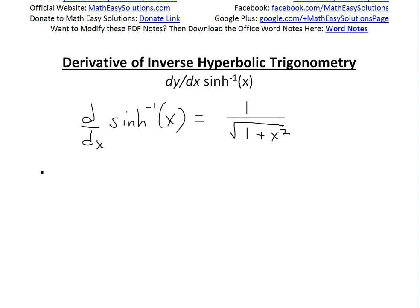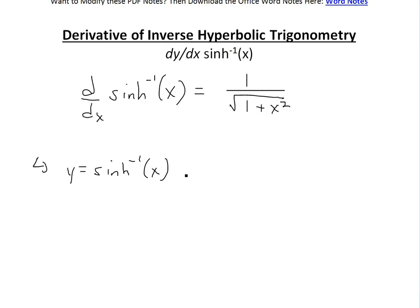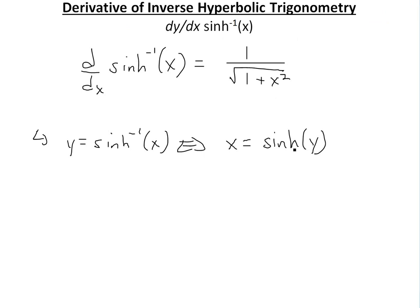First, with inverse functions, let's let y equal the inverse hyperbolic sine of x. What this means is — the same as with inverse functions — we can write x equals the hyperbolic sine of y. Now we're going to solve for y, which is essentially what all inverse functions do: replace x and y and solve for y.